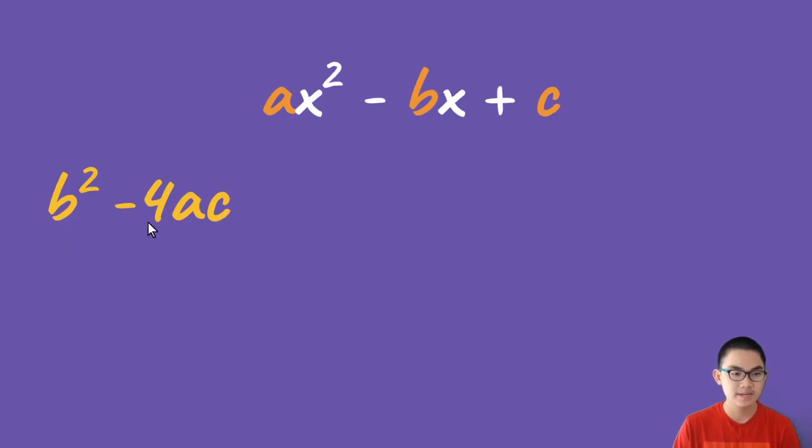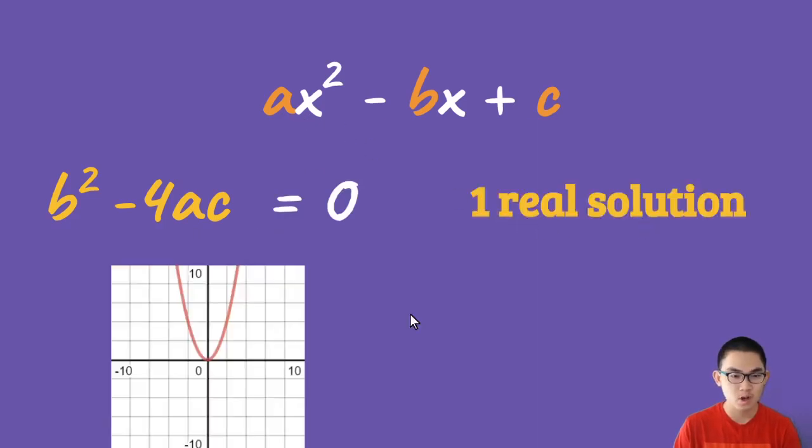When the discriminant is equal to zero, it means that this function has only one real solution, or it touches the x-axis at only one point.